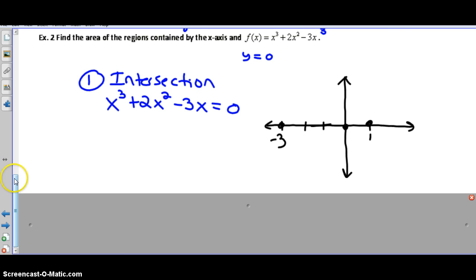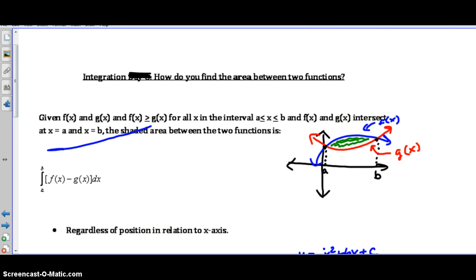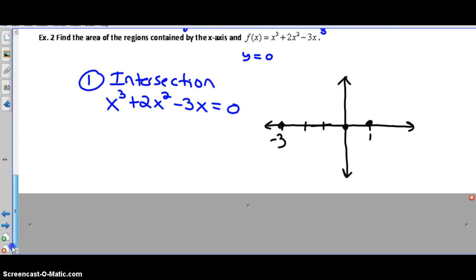Our first step is always going to be find the intersections. Going back to our original part of our answer, our definition, it wants us to find our a and b value. It is defined as where they intersect, because we are finding the area between two functions. We need to know where they intersect so that we can determine the part that we're finding, a and b. That will always be your first step. Stress that, highlight that - finding the intersections is my first step.